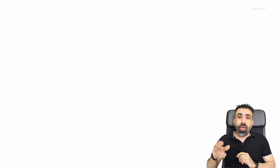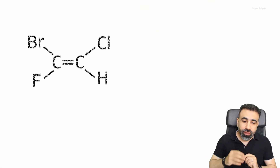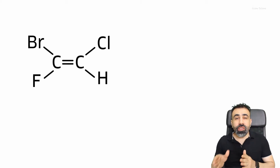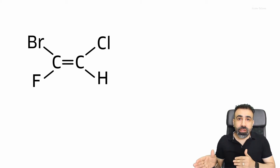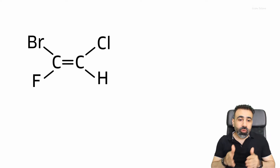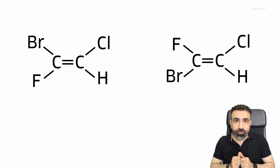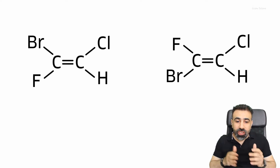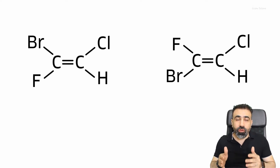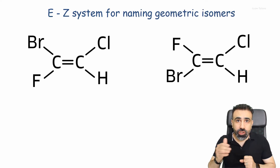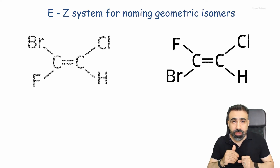Last time we stopped at a structure where we couldn't use the cis-trans system for naming geometric isomers to differentiate between two structures. To differentiate between them, we have to apply the EZ system for naming geometric isomers.